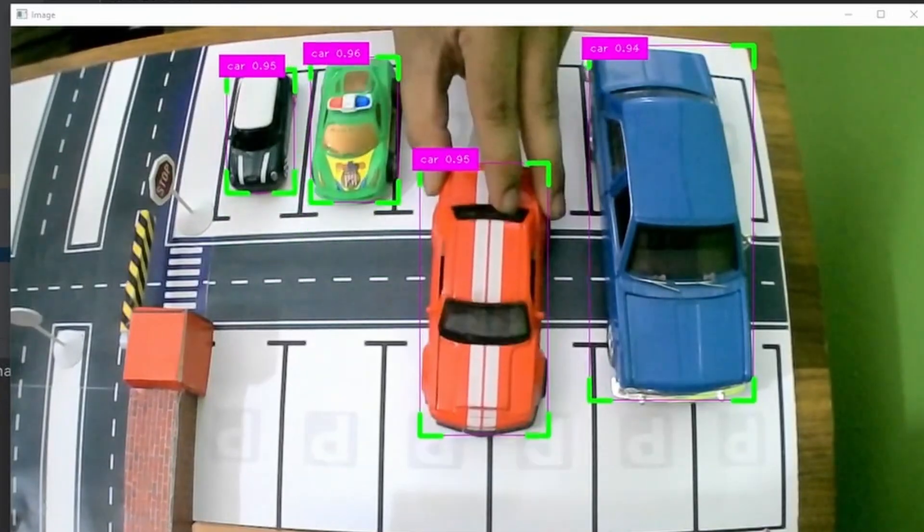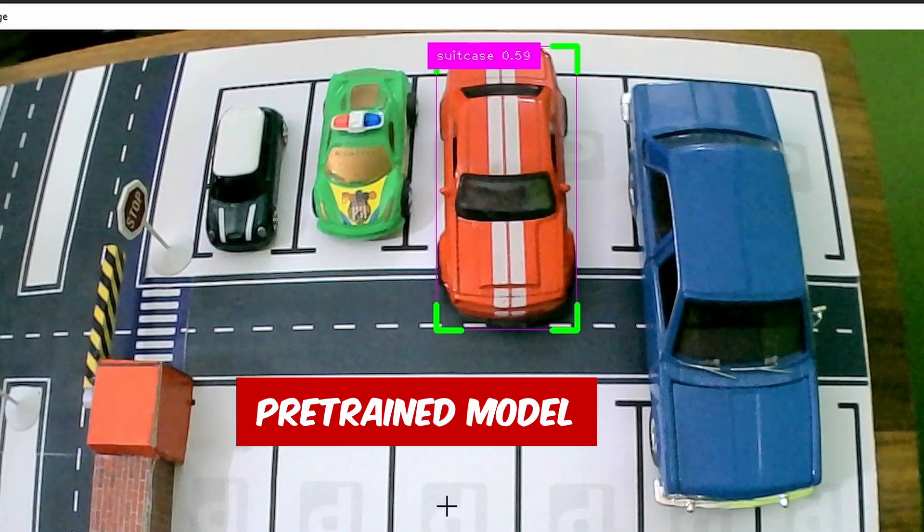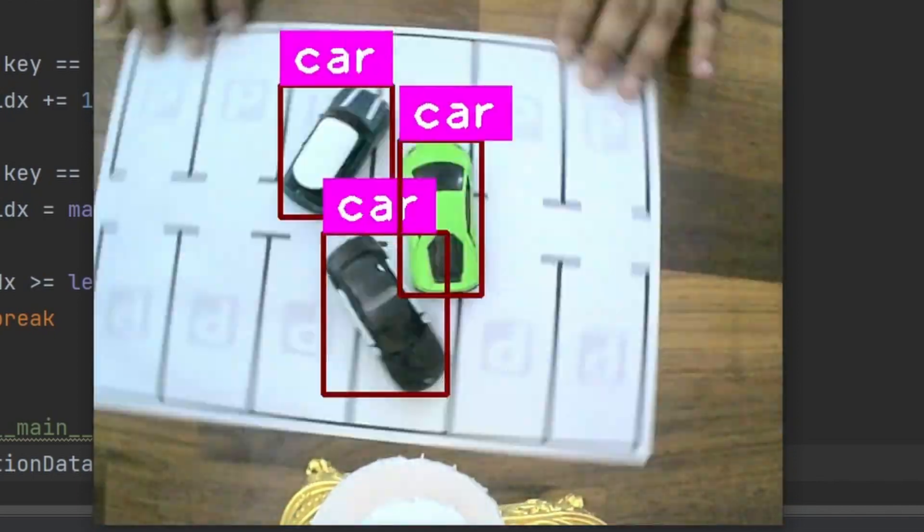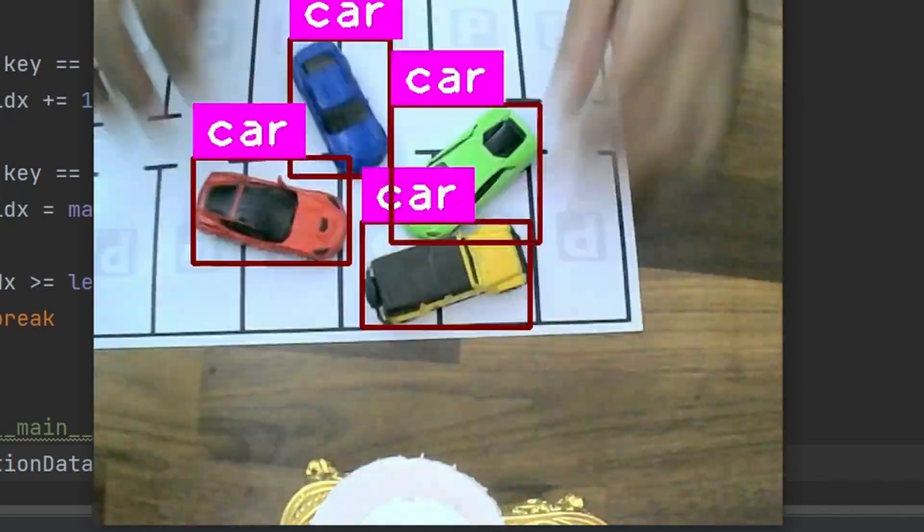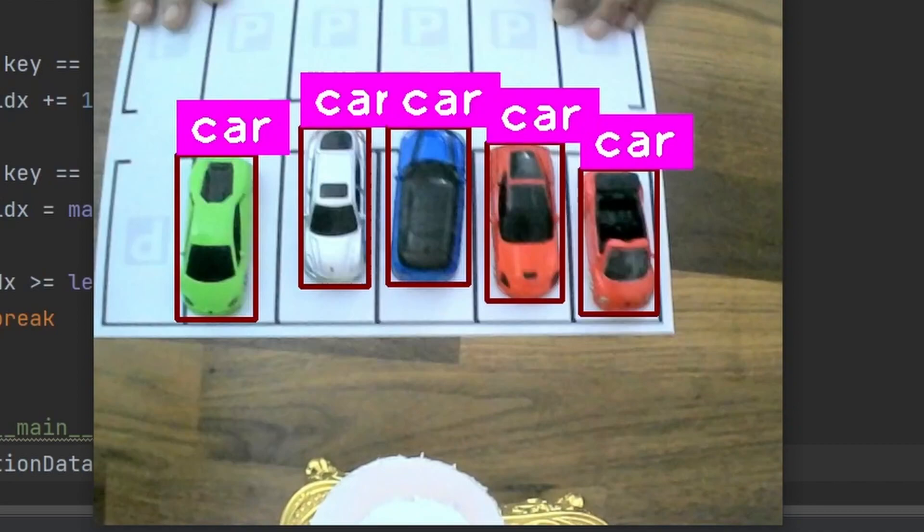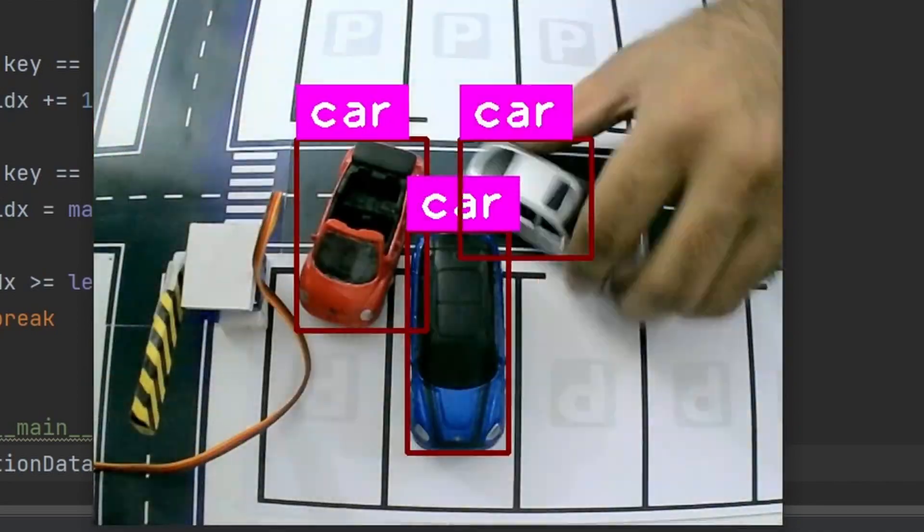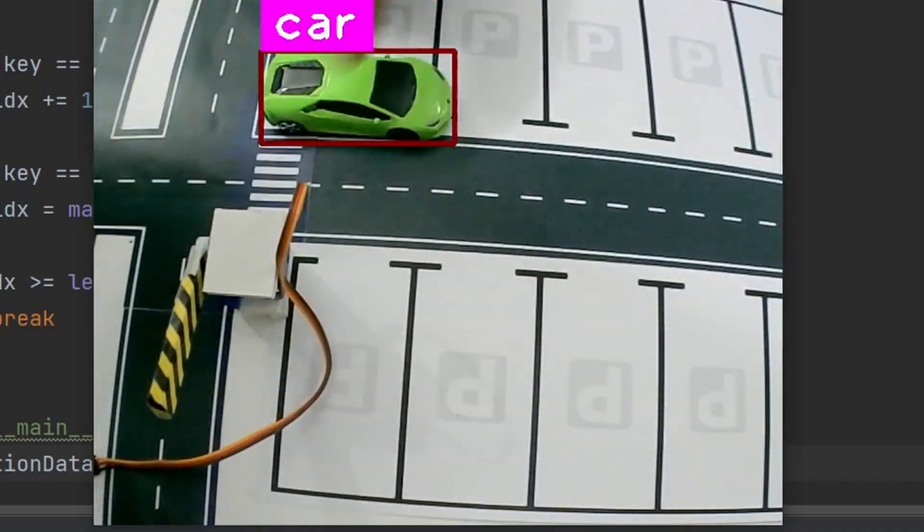But how will we detect the cars? Pretrained models don't really work well with mini cars. We will create our own dataset and create our own custom model for the mini cars. We will provide you with this model but in case this does not work for your cars, we will teach you step by step how to create your own models from scratch.